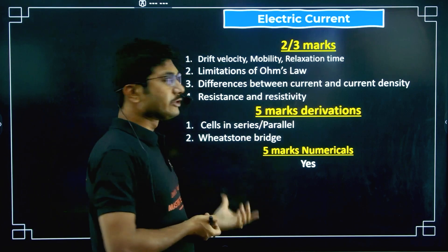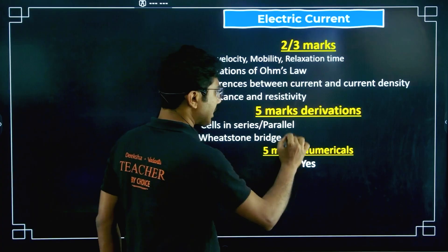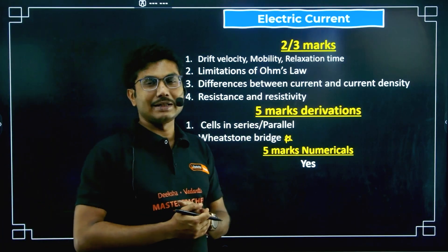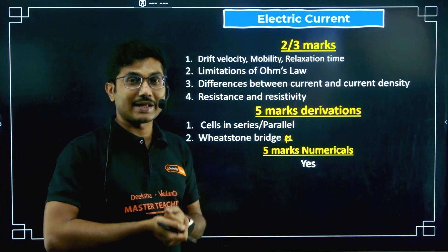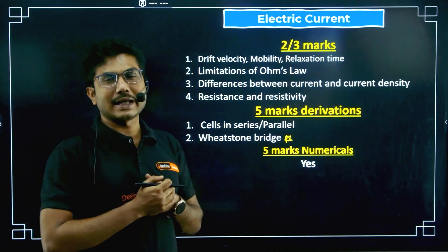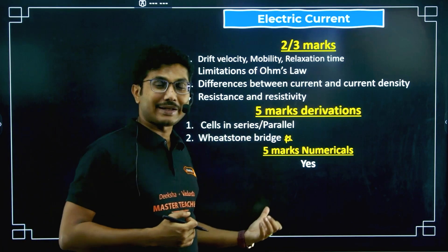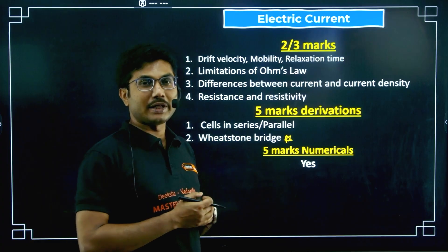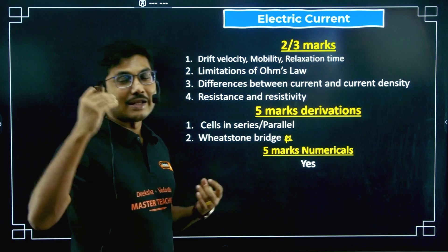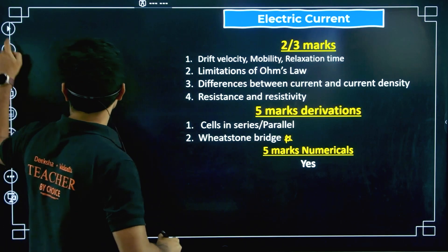Wheatstone bridge is one of the most important derivations from this chapter — you cannot skip it. Five-mark numericals will definitely come from this chapter. Be aware that circuit diagram-based numericals might come, which can sometimes be a little difficult and lengthy. If you have practiced, you can solve them; otherwise, if it is a circuit diagram-based numerical you can skip it, but if it is simply formula-based you can attempt it.